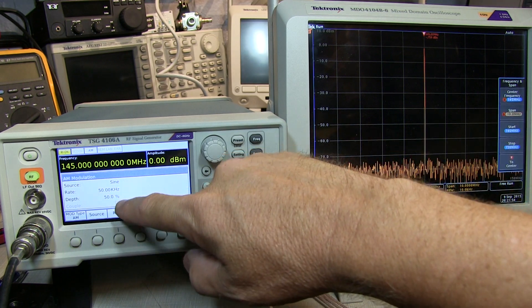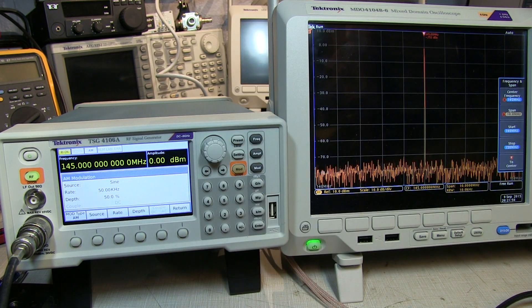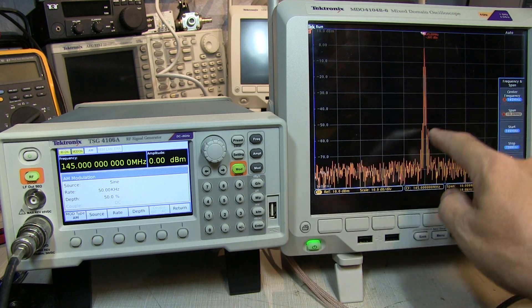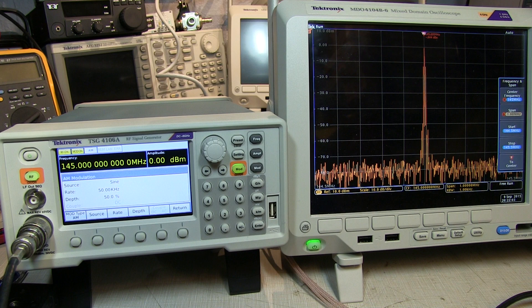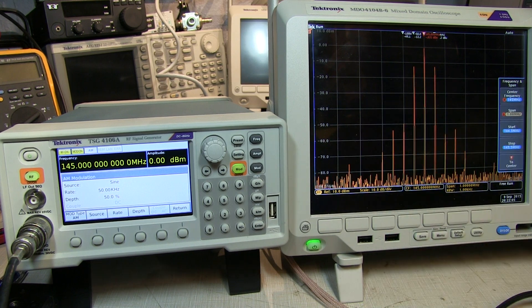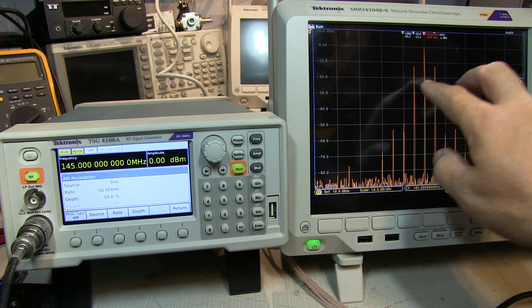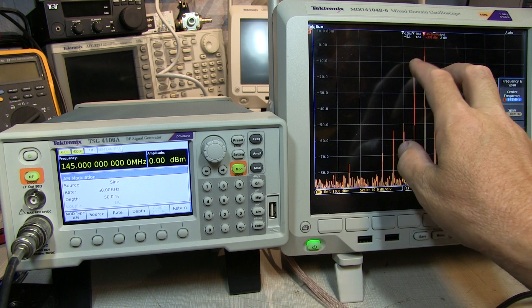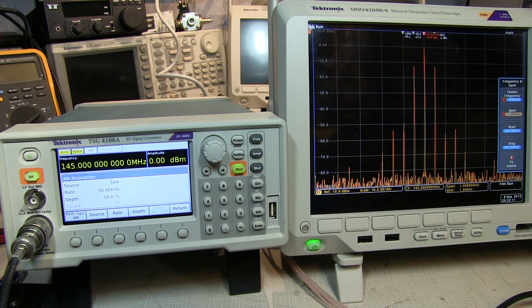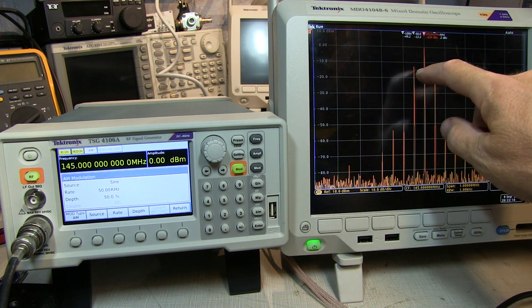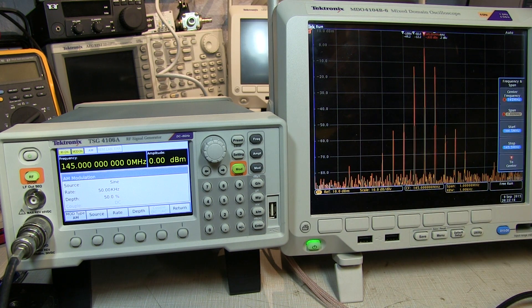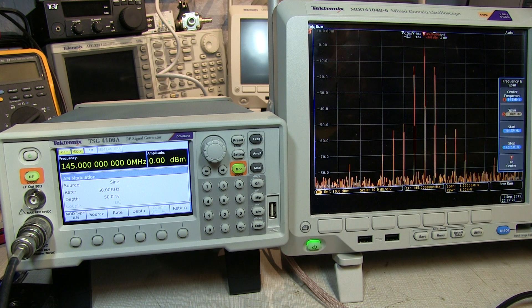We'll select that, do a 50 kHz sine wave, a 50% modulation depth, turn the modulation on, and we can see the sidebands come up here. Let's knock our span down to, say, 1 MHz. Now we can actually see the modulation sidebands. There's our carrier. There's the upper and lower sideband for the AM signal. Now we can see there is some harmonic distortion on the baseband signal, but it's about 40 dB down. So, that's perfectly fine.